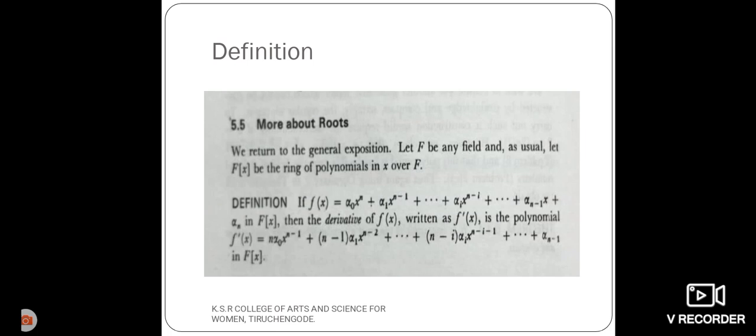The derivative of F of X is written as F dash of X, is a polynomial F dash of X equals N into alpha naught X power N minus 1 plus N minus 1 into alpha 1 X power N minus 2 plus etc.